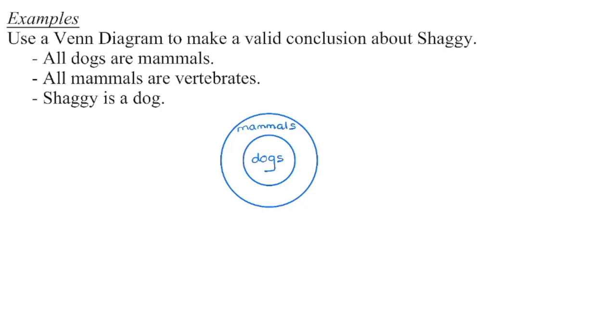Now remember, with deductive reasoning, we're starting with general statements, and we're moving to a specific conclusion. We're going to begin with a non-algebraic example, and in this first question, we're asked to produce a Venn diagram. So we know a Venn diagram is a way to represent the comparison of different items, and there's more than one way you can draw it. So in this particular case, our first statement is all dogs are mammals.